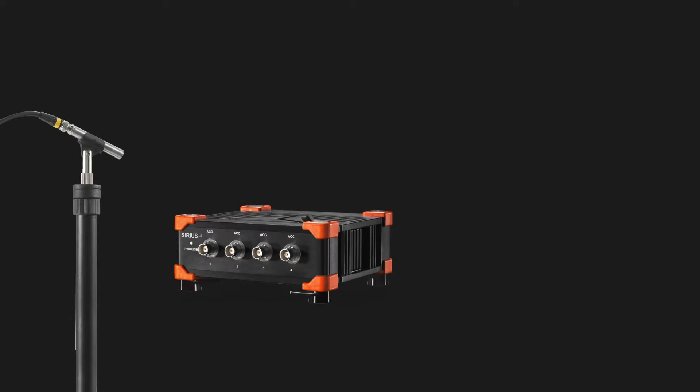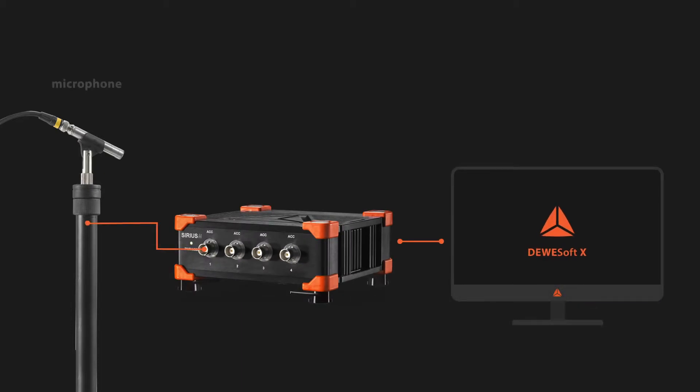Sound level meters are instruments used to assess levels of sound, often unwanted sound called noise, by measuring the pressure of the sound waves travelling through the air from the source. In essence, a sound level meter consists of the microphone capsule, pre-amplifier, cables, data acquisition system and of course a PC running Dewesoft. The microphone converts the sound signal to an equivalent electrical signal, which is then amplified by the pre-amplifier before it's processed.